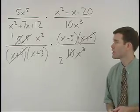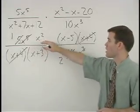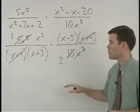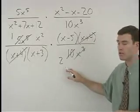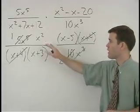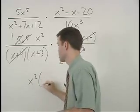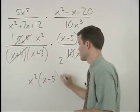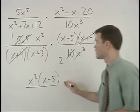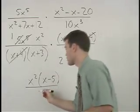To simplify from here, simply multiply across the numerator and multiply across the denominator. So we have x squared times x minus 5 over 2 times x plus 3.